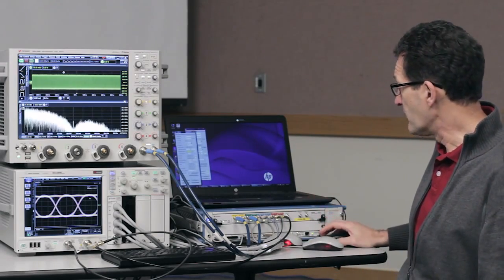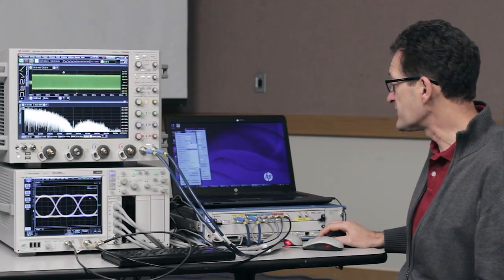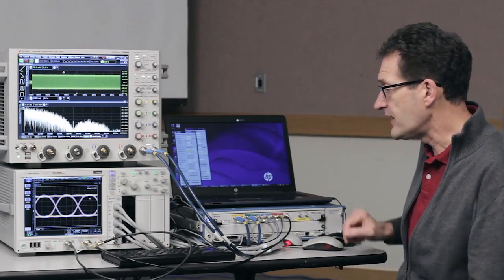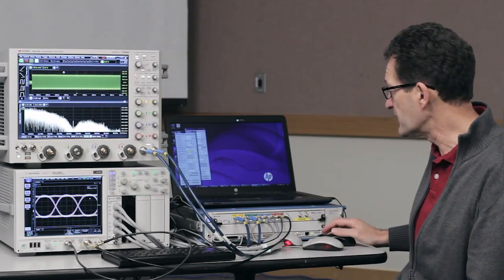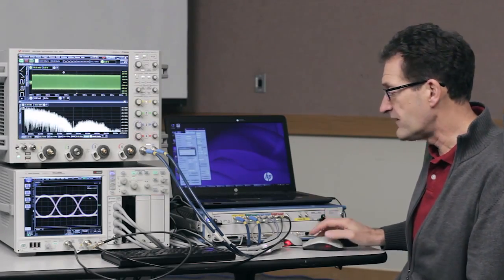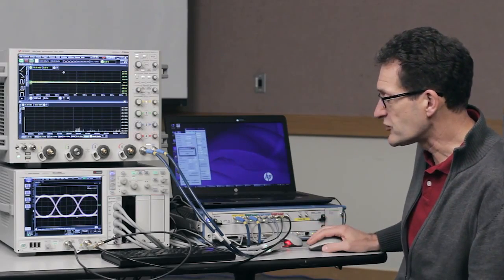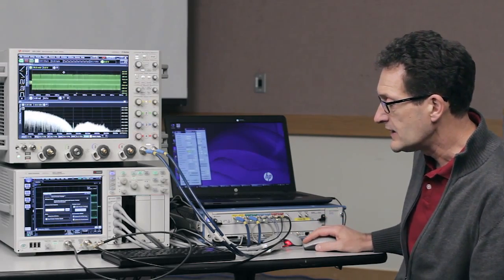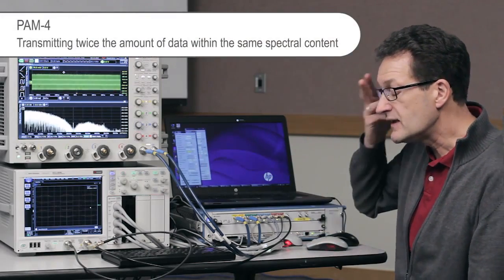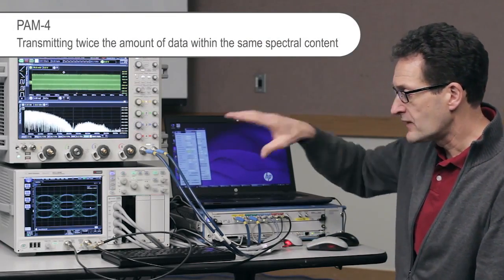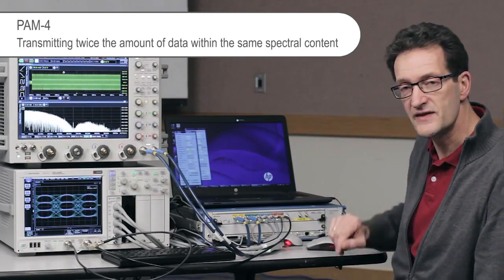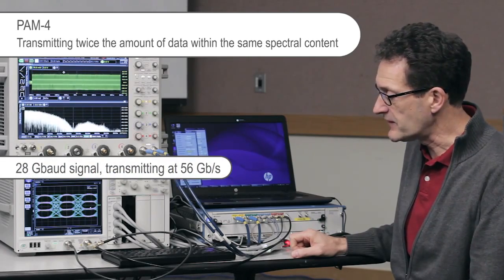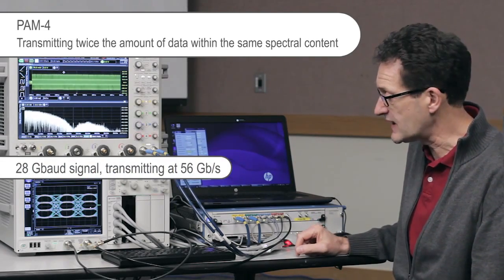The nice thing with PAM4 is when I change that to a PAM4 signal, and that's really a benefit of using an arbitrary waveform generator. By controlling a switch in the software, you can switch this over from NRZ to PAM4. So if I load a PAM4 signal, you notice the spectrum doesn't actually change. It looks very much the same, except that now we're transmitting twice the amount of data over that same link within the same spectral content. And you can see the PAM4 signal at 28 gigabits still looks very nice. So now we're transmitting 56 gigabits per second.